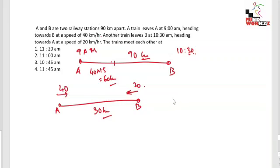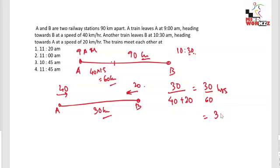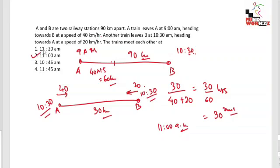Time for them to meet = distance / sum of speeds = 30 / (40 + 20) = 30/60 = 0.5 hours = 30 minutes. Since B starts at 10:30 a.m., they meet 30 minutes later at 11:00 a.m. The answer is 11 a.m. — a very easy question. Identifying sitters is a very important element of attempting a CAT paper.